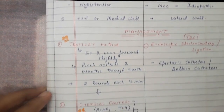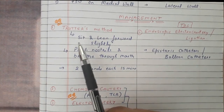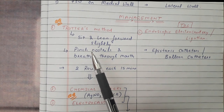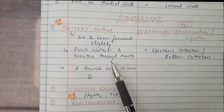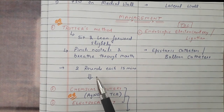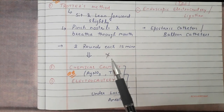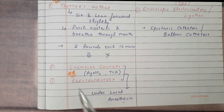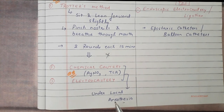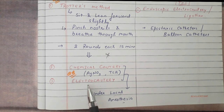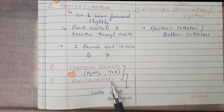For anterior epistaxis management, we use Trotter's method: the patient sits and leans forward slightly, pinches the nostril, and breathes through the mouth. This is repeated twice with a 15-minute cycle, and in most cases the bleeding stops. If this does not work, the next methods — performed under local anesthesia — are chemical cautery with silver nitrate (AgNO3) and trichloroacetic acid (TCA), or electrocautery. Using these methods, bleeding can be stopped.